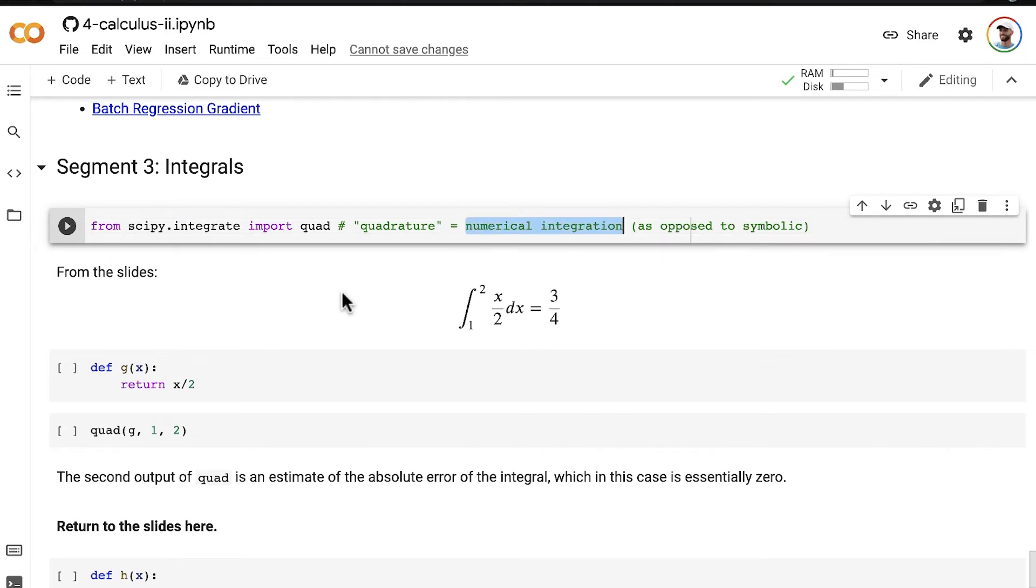And so that's what we're going to do right now. So as I just showed in the slides and talked about, the solution to this definite integration for this function x over 2 over the range of 1 to 2, that came out to 3 quarters.